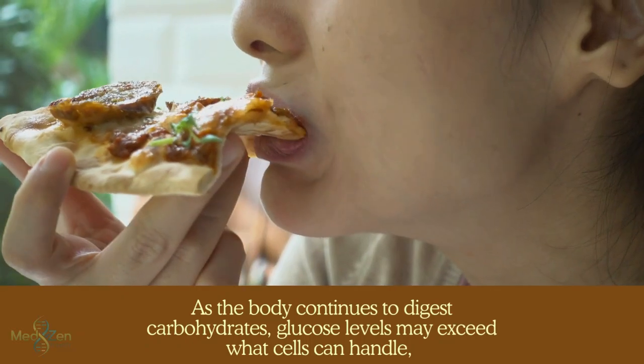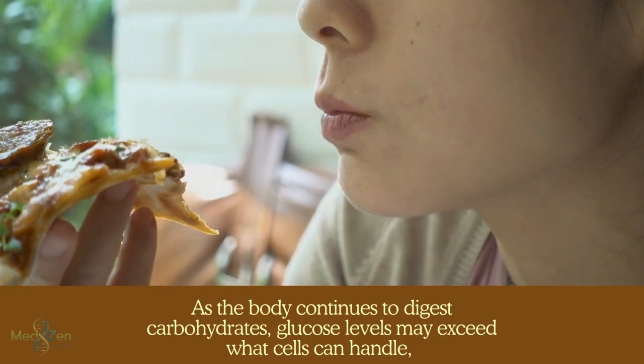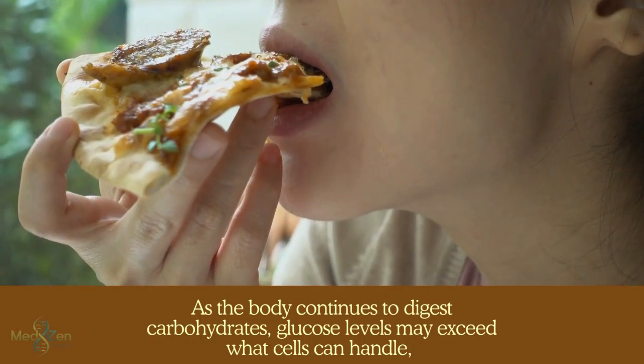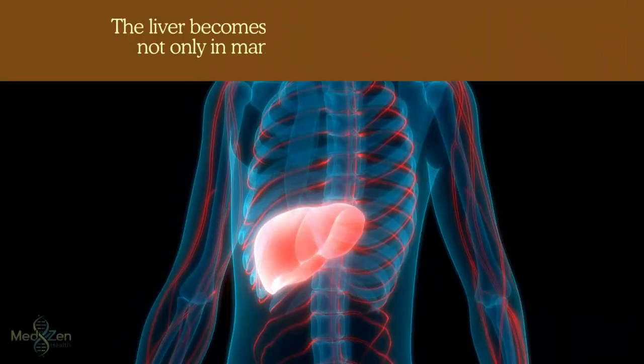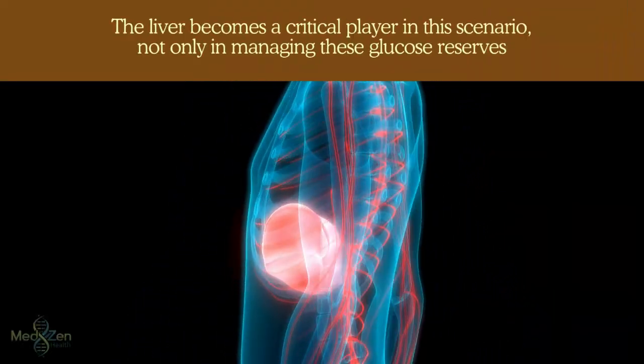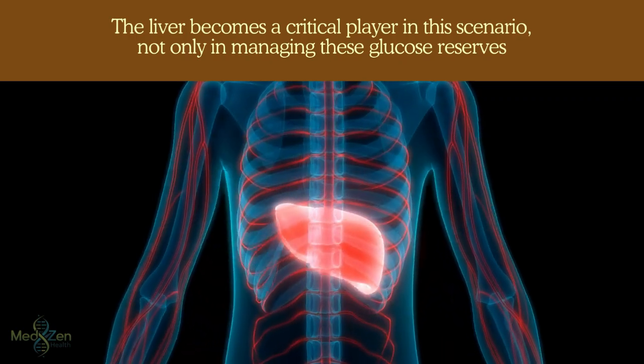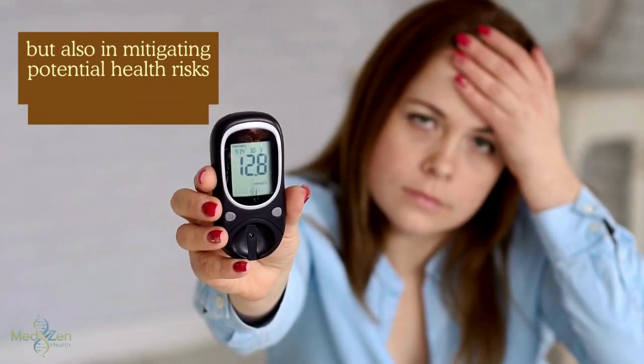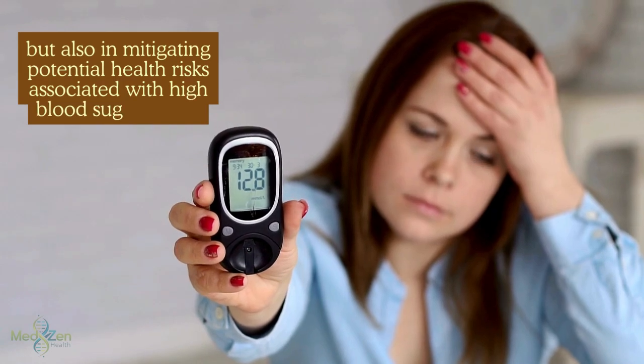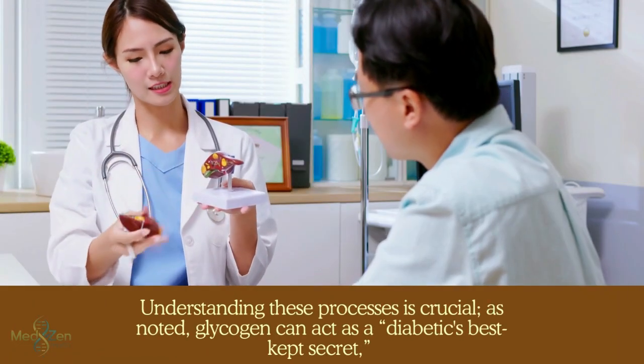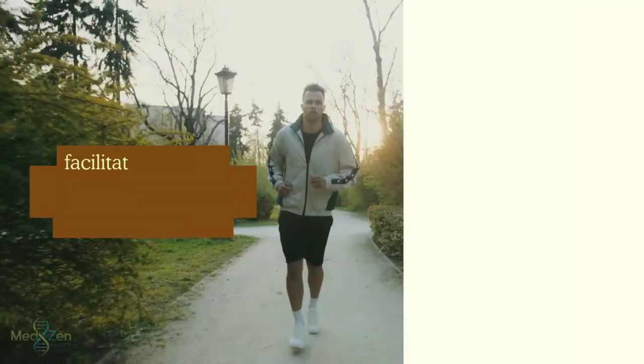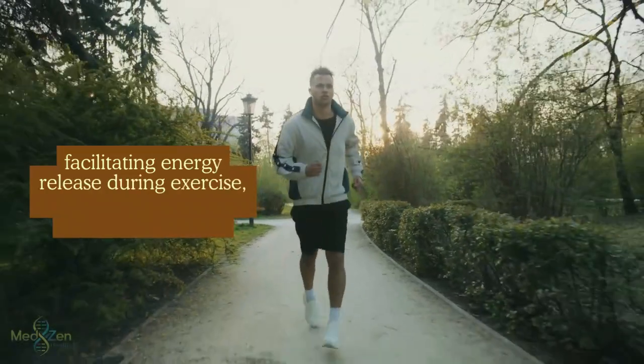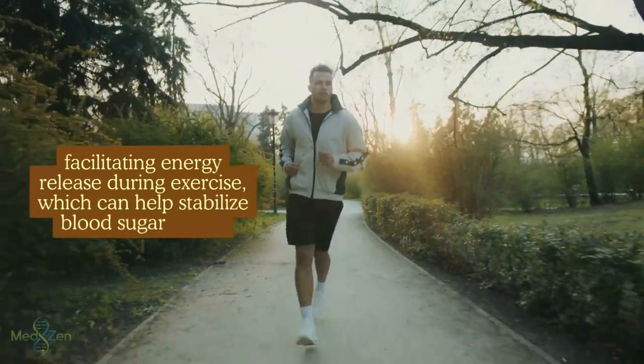As the body continues to digest carbohydrates, glucose levels may exceed what cells can handle, leading to potential complications such as diabetes. The liver becomes a critical player in this scenario, not only in managing these glucose reserves, but also in mitigating potential health risks associated with high blood sugar levels. Understanding these processes is crucial. As noted, glycogen can act as a diabetic's best kept secret, facilitating energy release during exercise, which can help stabilize blood sugar levels.